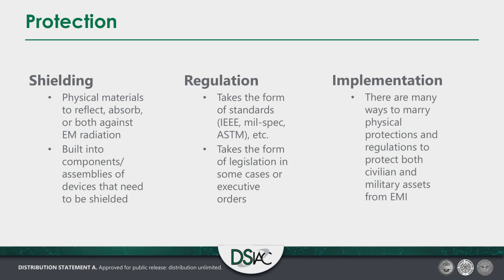How do we protect ourselves? There are a number of different avenues that all get married together. The first is shielding, which is a design and a material problem. But first we'll look at regulation and implementation, because these provide a baseline for shielding. Regulation takes the form of various standards: IEEE, MIL-Spec and MIL-Handbook for the military, the American Society for Testing Materials (ASTM), and forms of legislation or executive orders. On top of that, there are many different ways to marry physical protections and regulations that allow us to protect civilian and military assets and allow military assets to do their jobs while being supported by civilian assets.